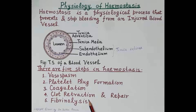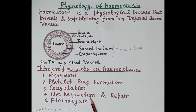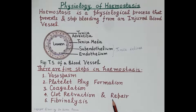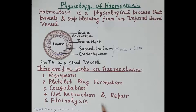Coagulation is followed by the fourth step: clot retraction and repair. The platelets contract, the clot shrinks, and the ruptured edges of the blood vessel come together, closing the hole of the injured vessel. Once the hole is completely closed, there is no further loss of blood. The fifth and final step is fibrinolysis, in which the fibrin clot dissolves after healing of the blood vessel.